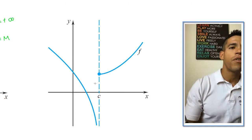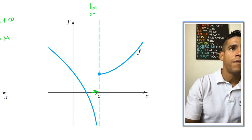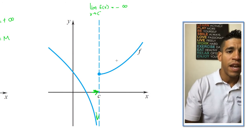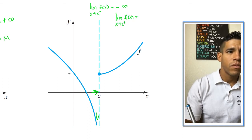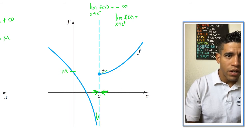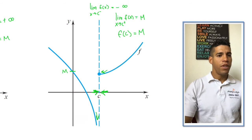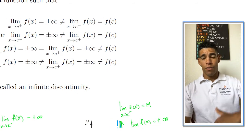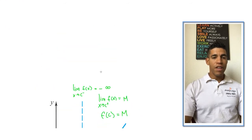In another example, the limit as x approaches c from the left equals negative infinity because the function is going toward the asymptote in the negative direction. The limit as x approaches c from the right equals some value m, and f(c) also equals m. This matches the second condition: the left-side limit goes to negative infinity, which is not equal to the right-side limit, which equals f(c).